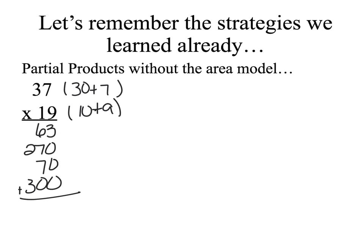Then I add my partial products. 3 plus 0 is 3. 6 plus 7 plus 7 is still 20, and 3 plus 2 plus 2 is still 7. So my answer is 703.